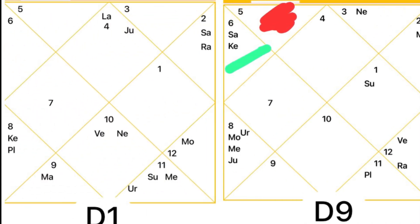Let me give an example. I'm putting both charts on the same screen to make it easier. In the D1 chart, this person is a Cancer Ascendant and there is a Parivartan Yoga formed by Jupiter and Moon — an exchange between the 1st and 9th house, making this person extremely lucky. The planet with the highest degree in this chart is Saturn, sitting in the 11th house of gains.